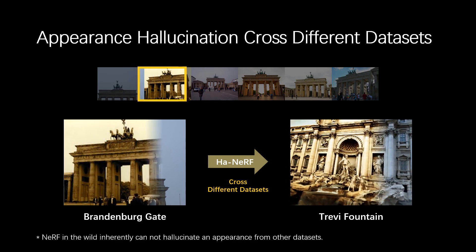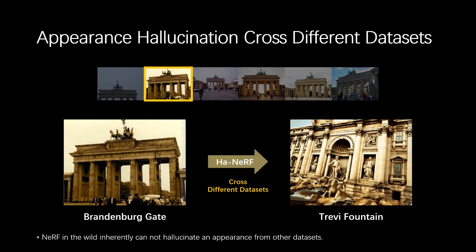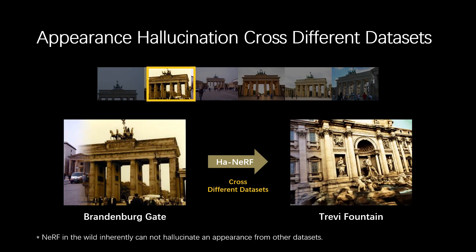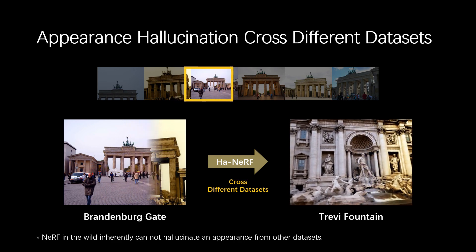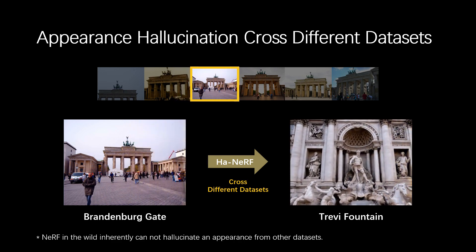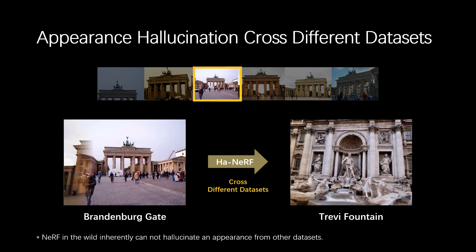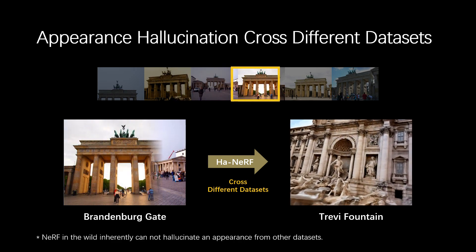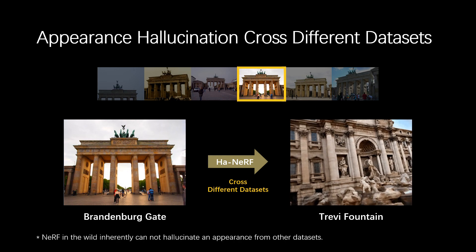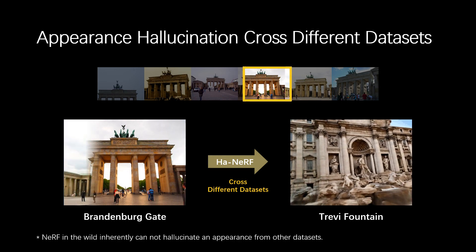We note that NERF-W inherently cannot hallucinate an appearance from other datasets, because NERF-W needs to optimize the appearance vectors on example images which must depict the same place.